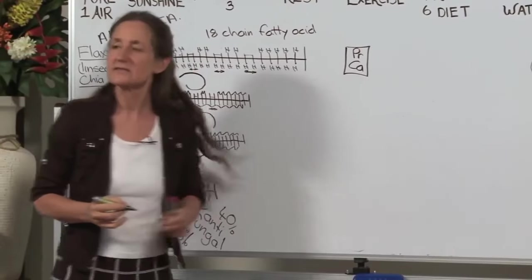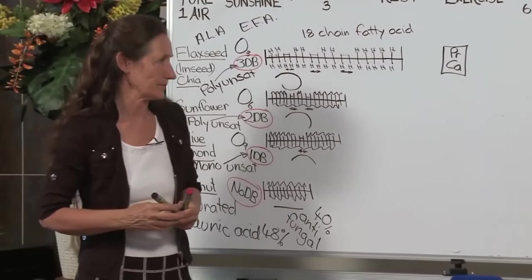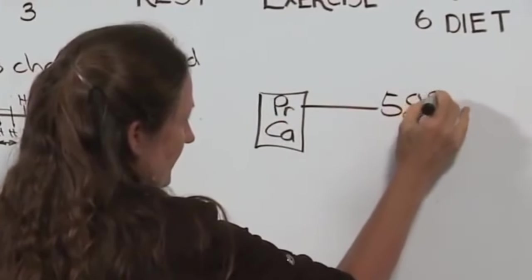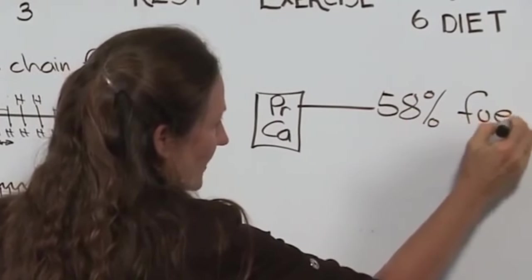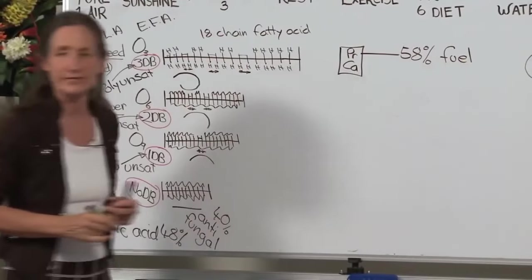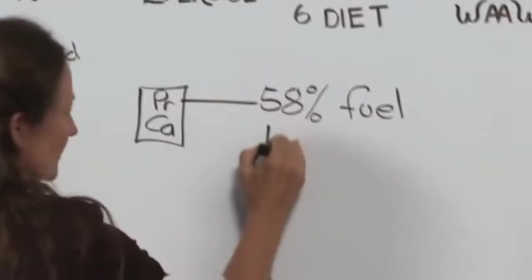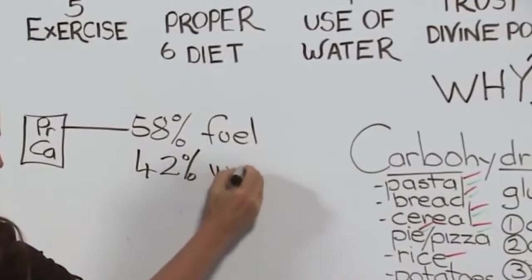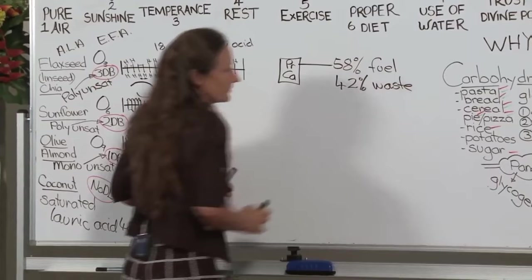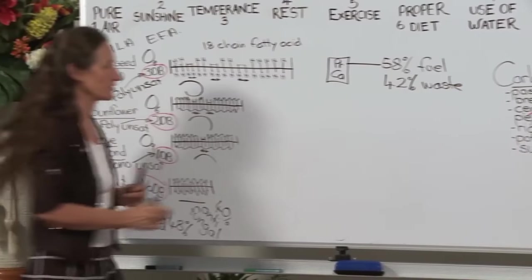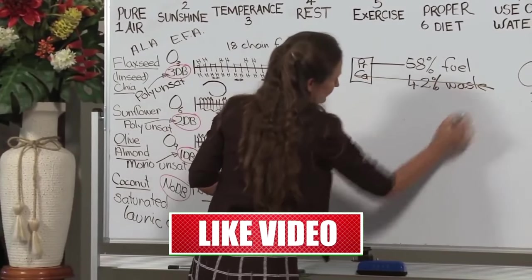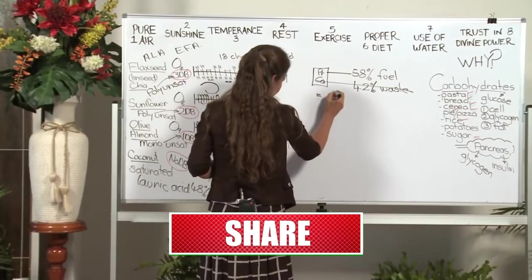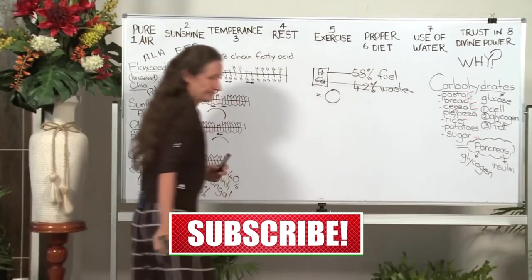But animal protein is very dirty burning fuel. In fact, only 58% of it is burnt as fuel, leaving a sulfur waste which has a very acid effect on the body. So this 42% waste has to be neutralized or alkalized, and so the body uses the most alkaline mineral, which is calcium, to negate the sulfur residue. How much calcium is left for the human body? None.